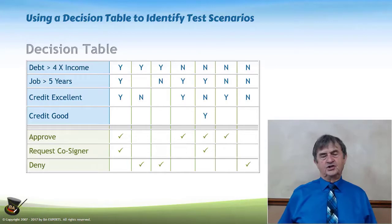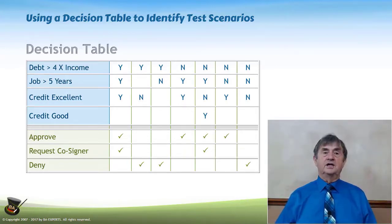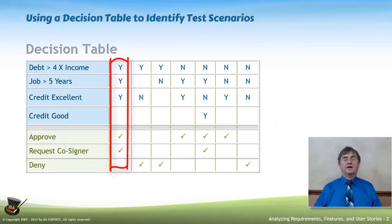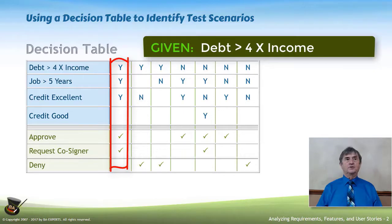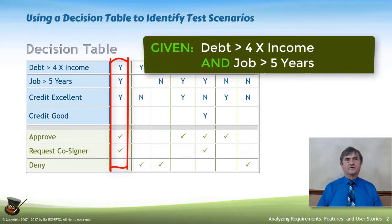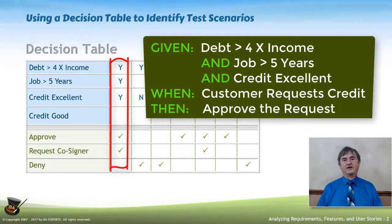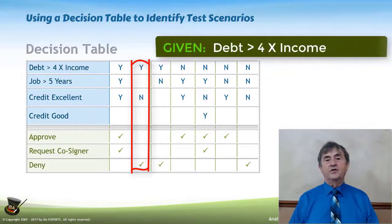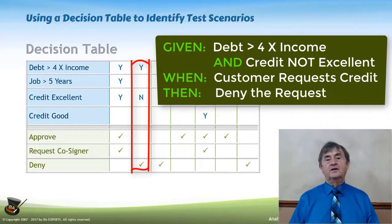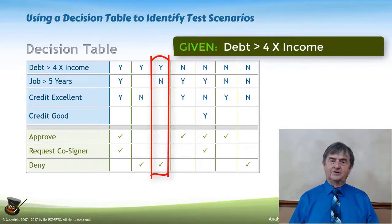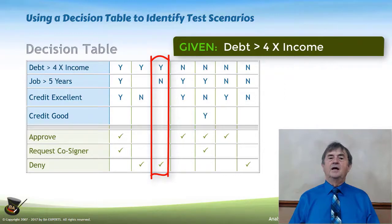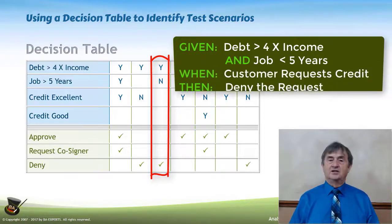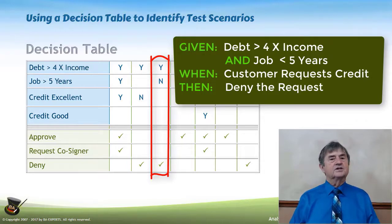To get from the decision table to test scenarios, they're right there. Given the first column, I could write: given that your debt is greater than four times your gross income, and you have been on the job for more than five years, and your credit is excellent, then approve the request and request a cosigner. The next test scenario: if your debt is greater than four times gross income and your credit is not excellent, then deny the request. Third column: if your debt is greater than four times gross income and you have not been on the job for more than five years, then deny the request. Every column is a test scenario.